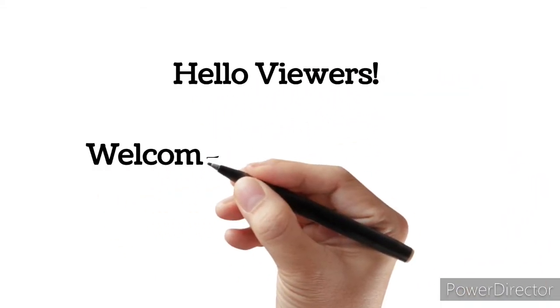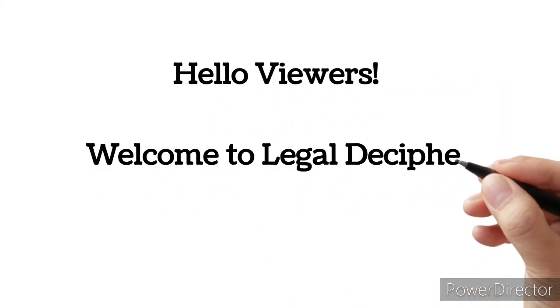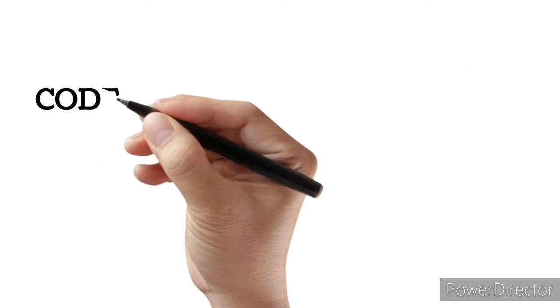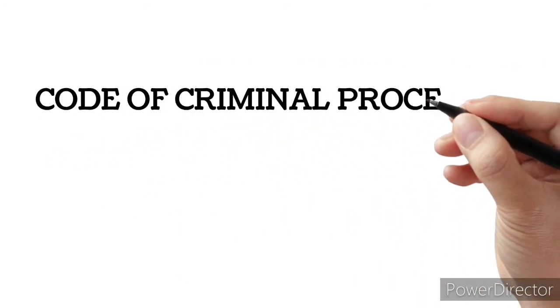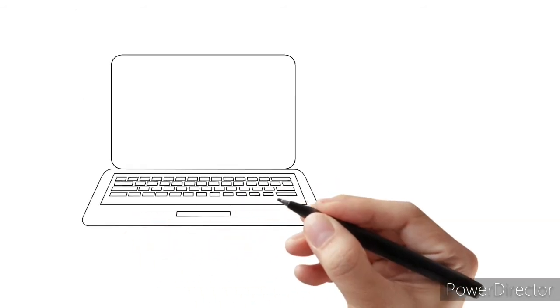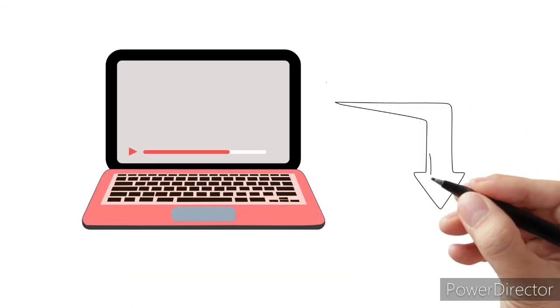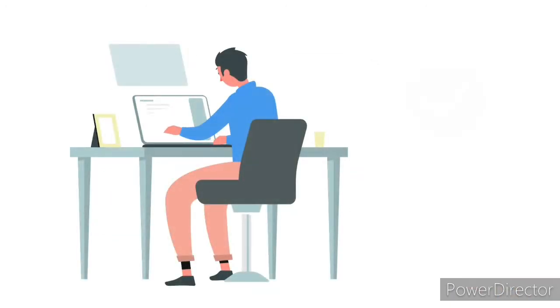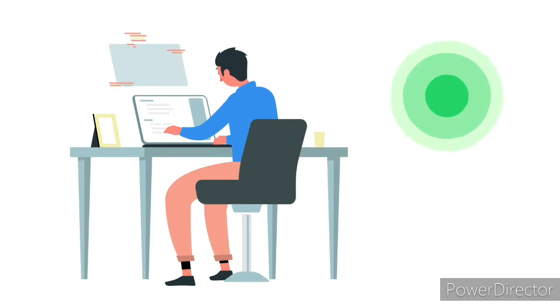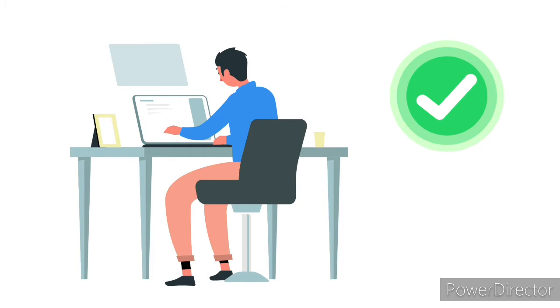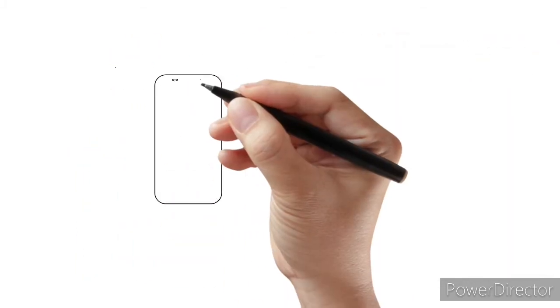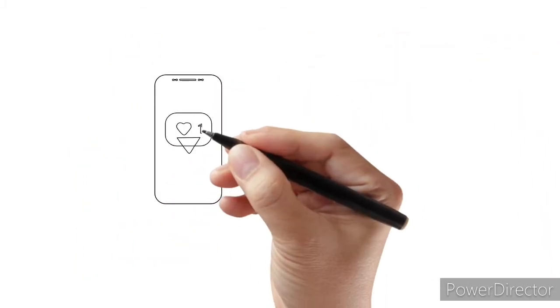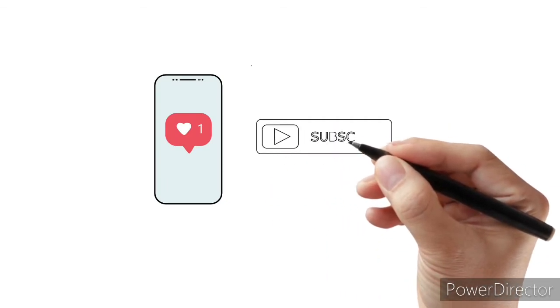Hello viewers, welcome back to my channel LegalDecipher. In the previous video we discussed about Chapter 3 of the Code of Criminal Procedure 1973. If you have not seen that video, you can go and check it — the link is in the description below. Today we will discuss about the contents of Chapter 4 of the CrPC. If you are new here, please like and subscribe the channel to get video notifications. So let's get started.